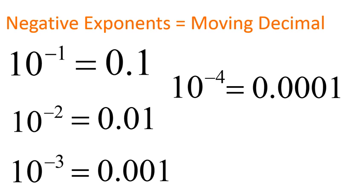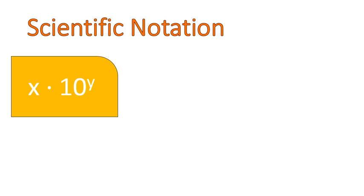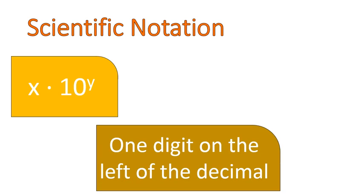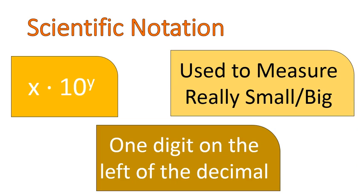So, scientific notation — how is that different than the lesson on powers of 10? With scientific notation, you always have a number times 10 to the power of something, and there's one digit on the left of the decimal. Scientific notation is used in science to measure really big or really small things — for example, the distance from Earth to the nearest star, the mass of the Earth, the size of an atom, or the distance between electrons.